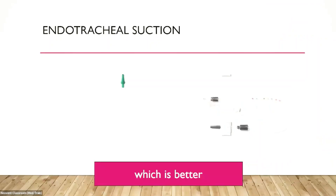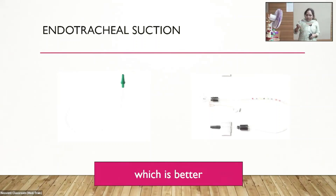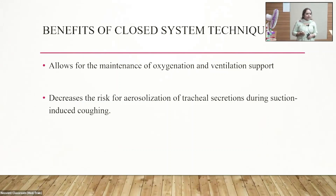The closed suction system uses a multi-use suction catheter inside a sterile plastic sleeve, inserted through a special diaphragm attached to the end of the ET or tracheostomy tube. This is the single-use type; this is the multi-use closed-end suction catheter. Closed-end suction catheter is better because it allows maintenance of oxygenation and ventilation support, as we do not need to disconnect the ventilator, and there is decreased risk of aerosolization of tracheal secretions during suction-induced coughing.